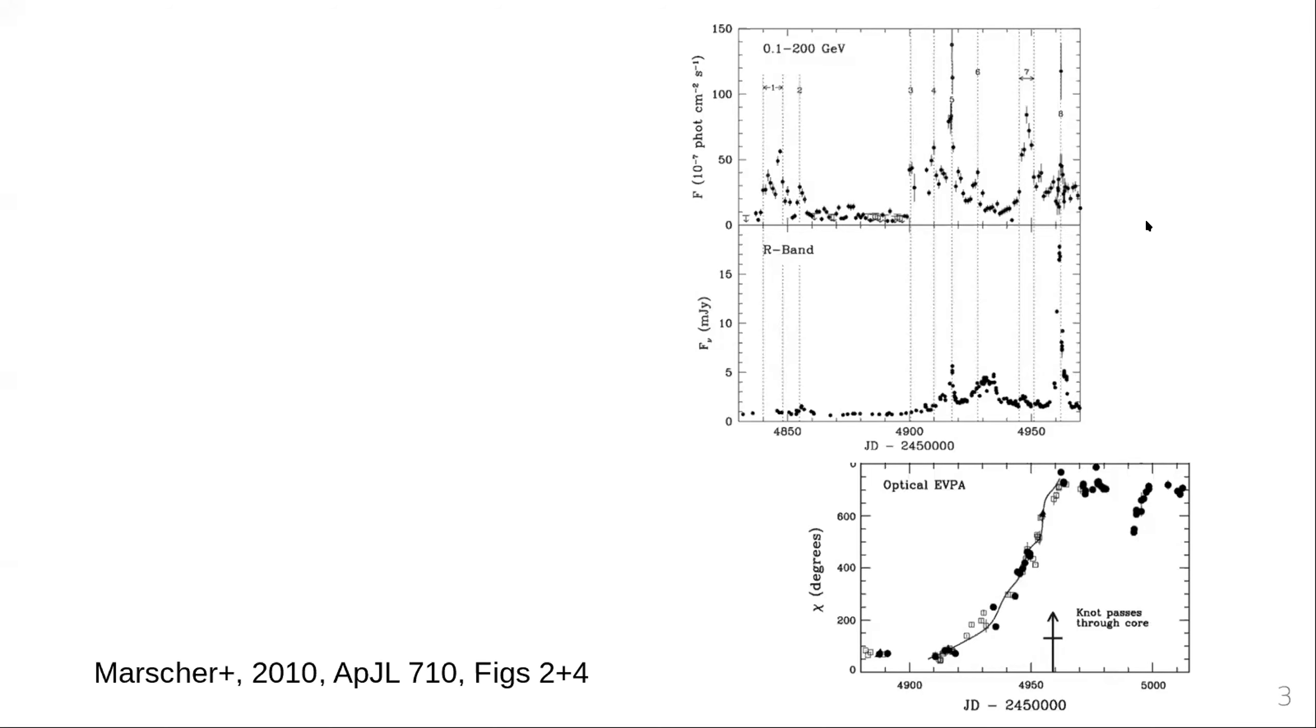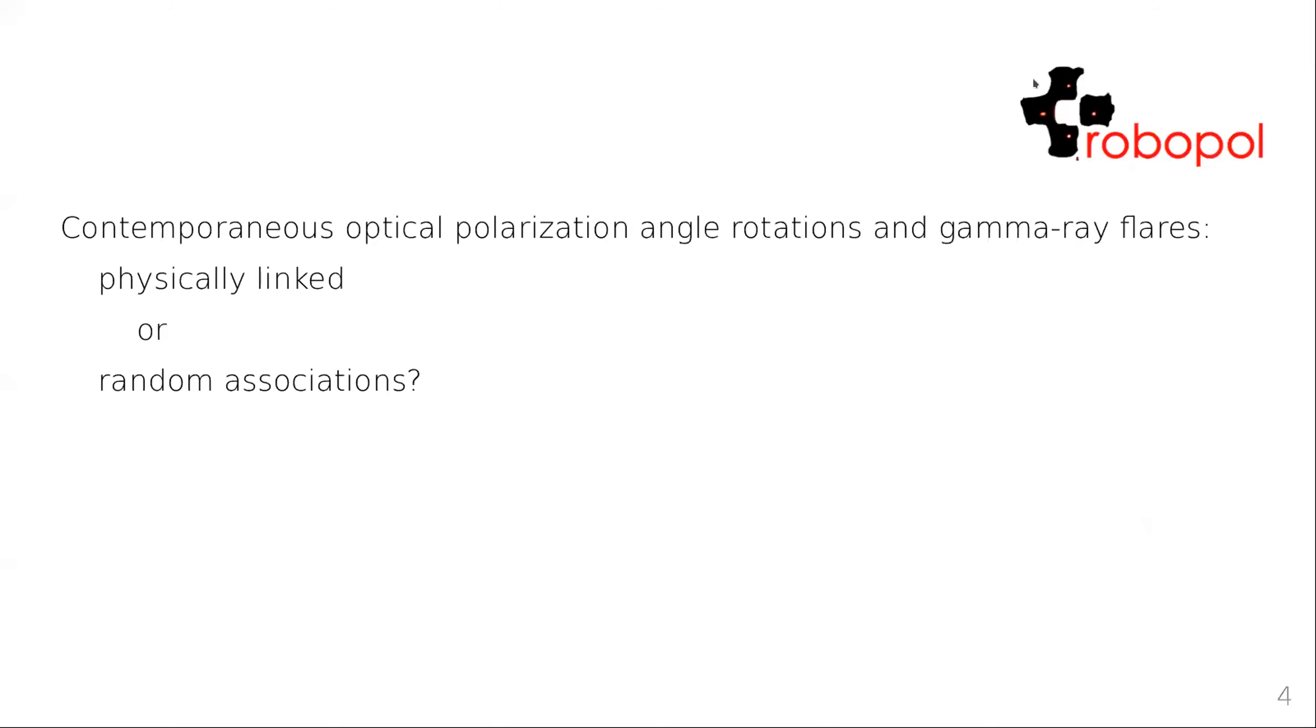But in general, it's not that easy, as Dima has also pointed out, to observe persistent patterns. To really answer the question whether those two events are related, a statistical approach is needed. And that was the point of the main RoboPol program. We wanted to answer this question, whether those contemporaneous events of optical polarization rotations and gamma ray flares are actually physically linked or just random associations.